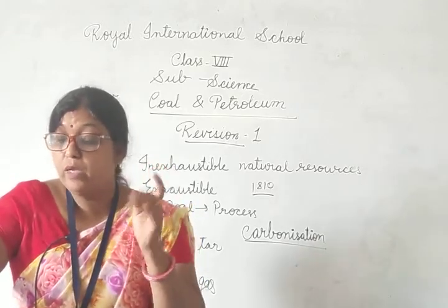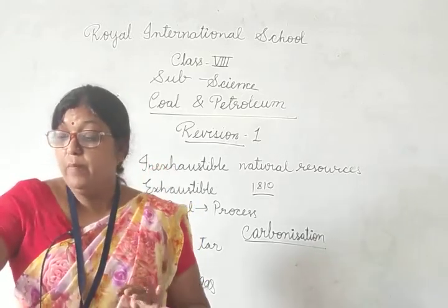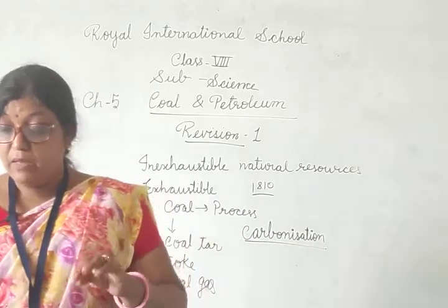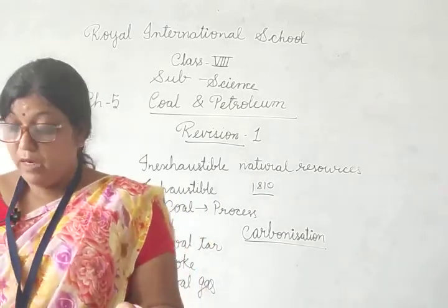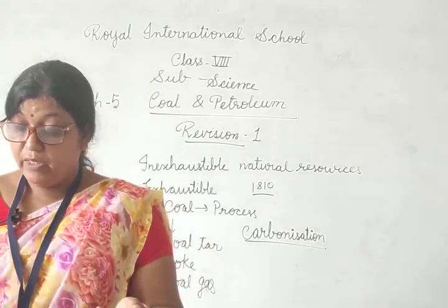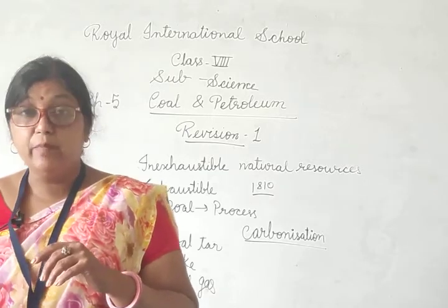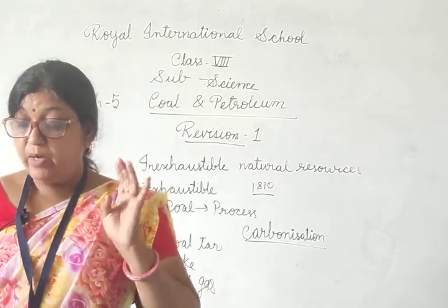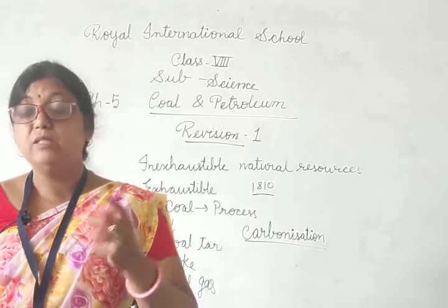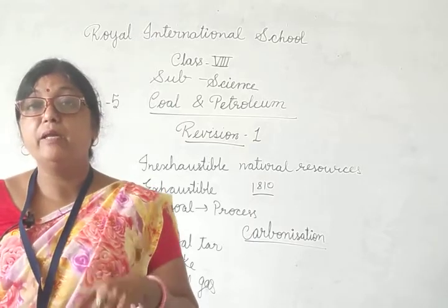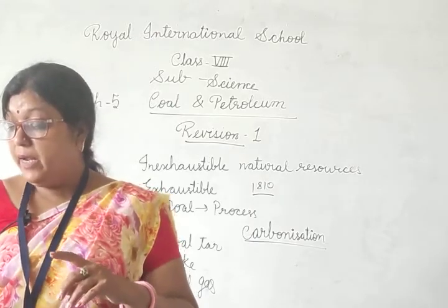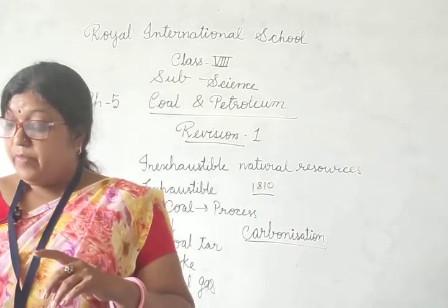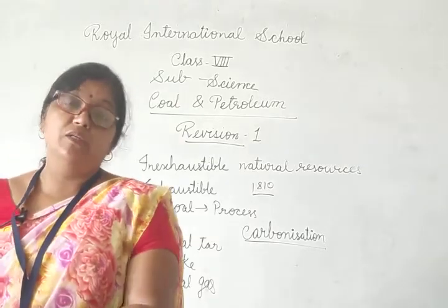Uses of coke: number 1 — manufacture of water gas; number 2 — household use; number 3 — graphite banane mein kaam mein aata hai; number 4 — extraction of metals jaise ki iron, copper, tin, zinc — as an excellent reducing agent.